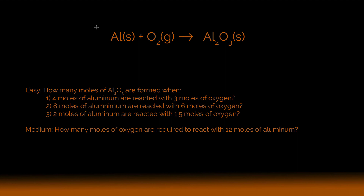The first thing I want to do is balance this reaction and talk about what those coefficients mean. Balancing a reaction is a lot of guess and check, but I'm going to start by balancing the oxygen. You have a two and a three, so the least common multiple is six. I'll put a three here and a two here, and then stick a four in front of aluminum to fully balance the reaction.